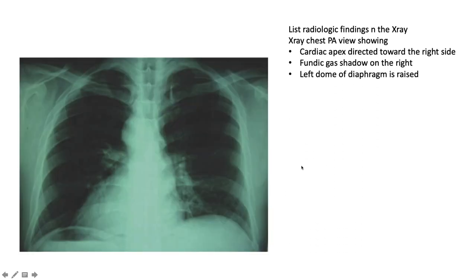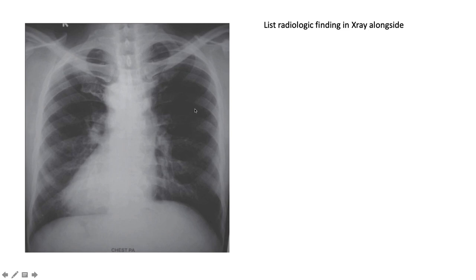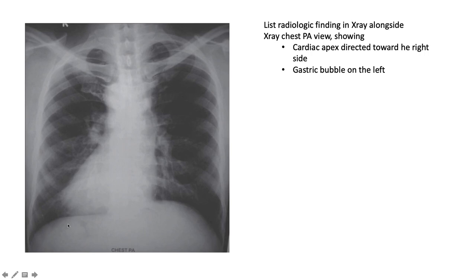This most interesting film shows the gastric bubble sitting on the right and the heart sitting on the right. This looks like situs inversus, but as we can see, the heart is to the right with no gastric bubble visible on the left — this is actually dextrocardia.